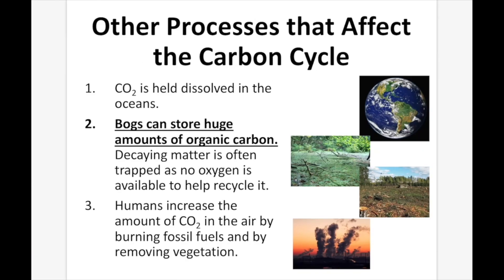Other processes also affect the carbon cycle. A huge amount of carbon is dissolved in the ocean, so carbon is constantly moving in and out of the oceans. As it moves out, it's generally in the form of carbon dioxide, and it can move back into the oceans and be stored as carbonic acid. Bogs — like swamps — can also store huge amounts of organic carbon via decaying matter that is trapped where no oxygen is available to decompose it, so things like trees and animals stuck in a bog retain their carbon.